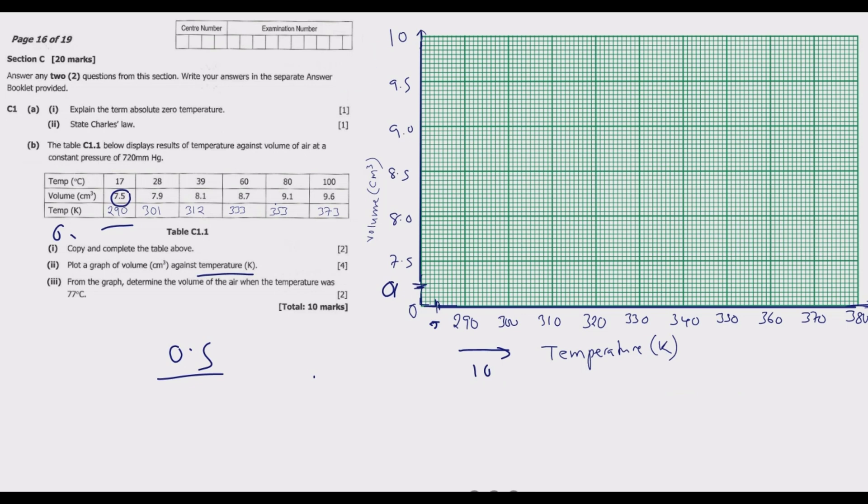Let us transfer the information now to the graph so we get the four marks. We start with the first one, which is 290, 7.5. So we go to 290 and put 7.5. This will be the first point. Remember there is no 0 here, so we're not starting from 0.